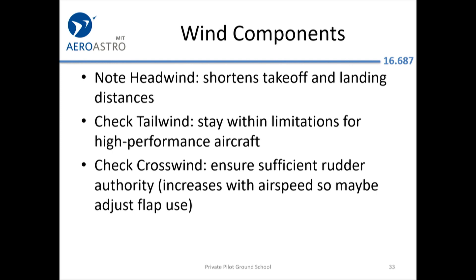Wind components: you'll get shorter takeoff and landing distances with a headwind. A tailwind may not even be legal — for the CRJ, we simply could not land with more than a 10-knot tailwind. Max demonstrated crosswind component in the manual tells you a test pilot managed to hold the airplane straight on the runway with a 15-knot crosswind. That's max demonstrated, not a limitation — unless it says so in the manual. Beyond that, you can't be sure the technique will work.